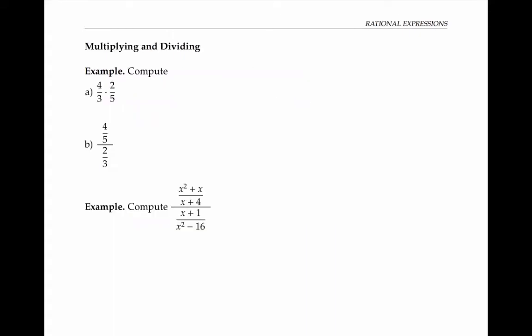Next, let's practice multiplying and dividing. Recall that if we multiply two fractions with just numbers in them, we simply multiply the numerators and multiply the denominators. So in this case, we would get four times two over three times five, or eight fifteenths.